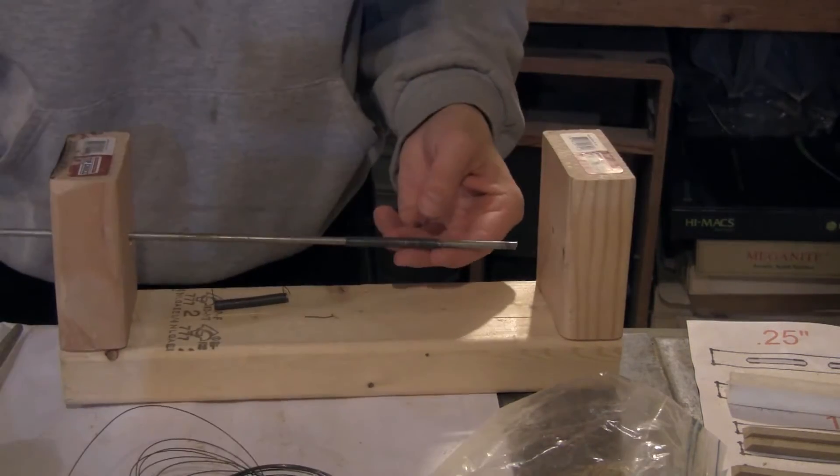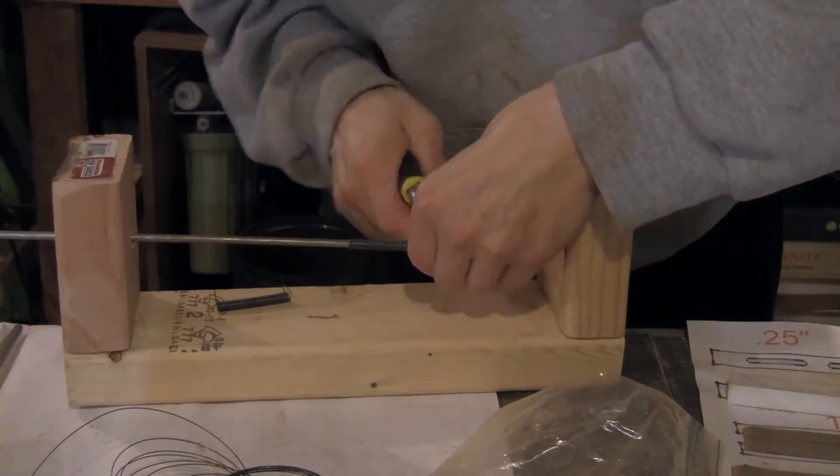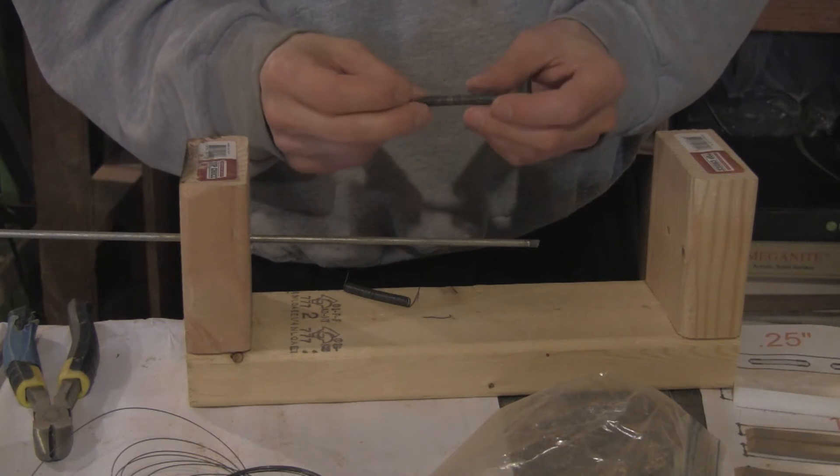Once you're finished with the coil, just clip the end. Being this small gauge wire, you don't really have to worry about the recoil. Not a bad spring. Some nice tight coils in that.